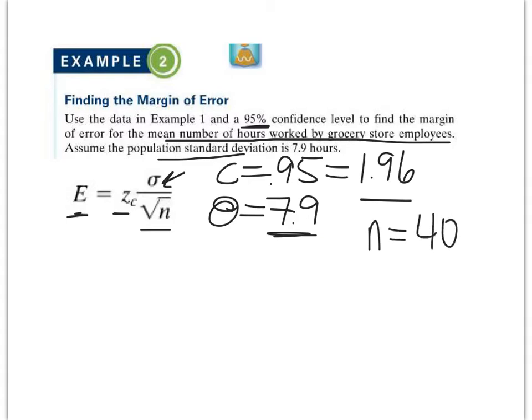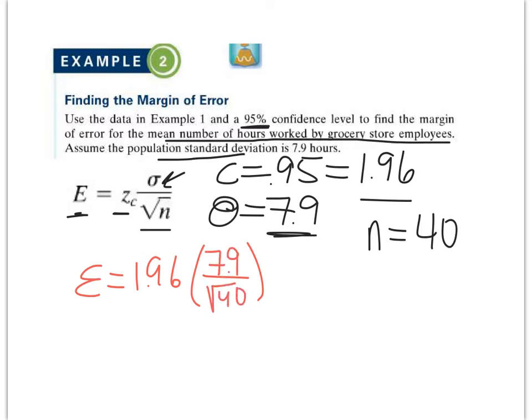We have everything we need to solve this problem. The margin of error equals 1.96 times 7.9 divided by the square root of 40. I'm going to put this in my graphing calculator: 1.96 times, and I'm going to take 7.9 and divide by the square root of 40.